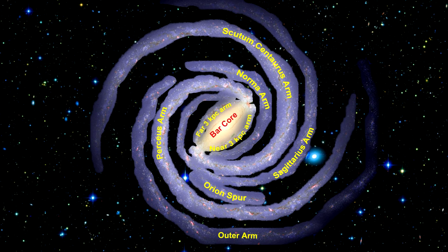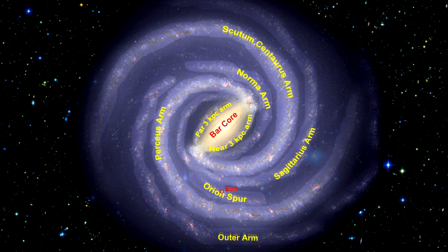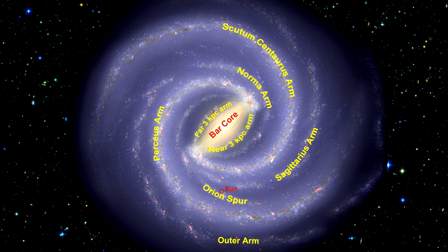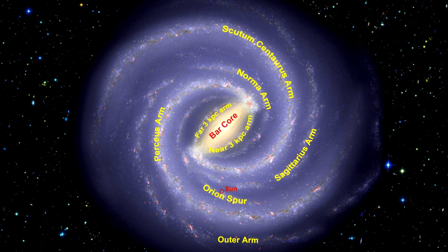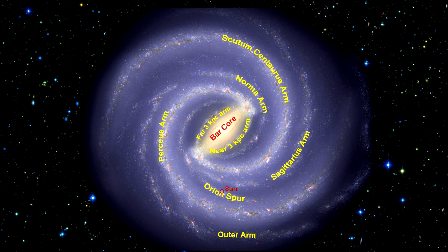There is also a spur off the Sagittarius arm called the Orion Spur — 3,500 light-years across, 2,000 light-years deep, and approximately 10,000 light-years long. We are located on the inner edge halfway along this spur, around 26,000 light-years from the galactic center. Interestingly, the number of stars per unit volume between the arms is the same as within the arms — what distinguishes the arms is a far greater number of younger stars. All known H2 star-forming regions in the galaxy exist inside the arms.